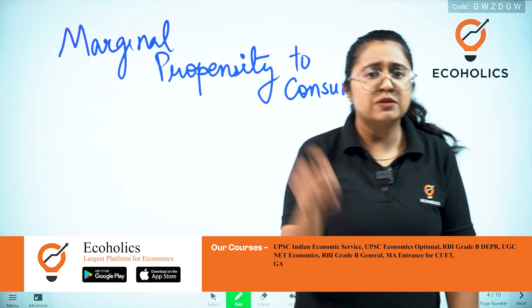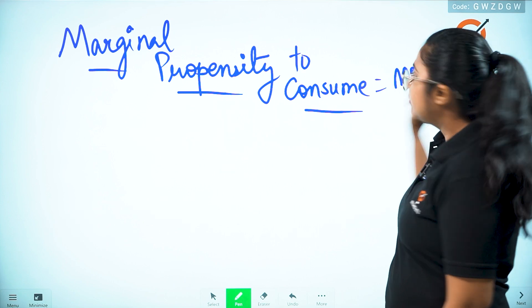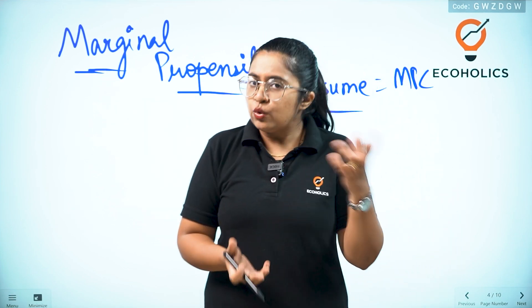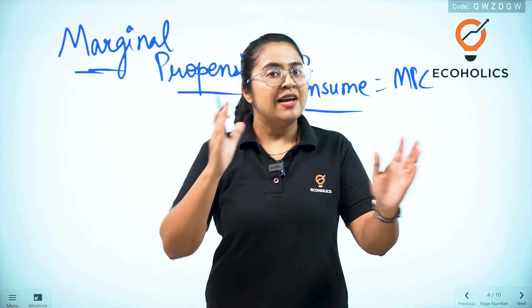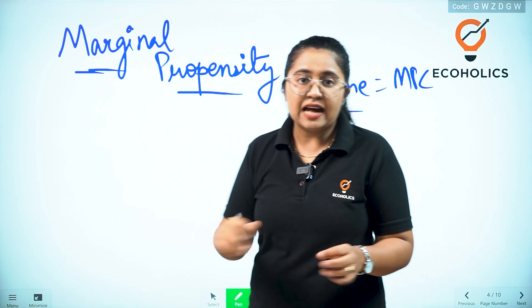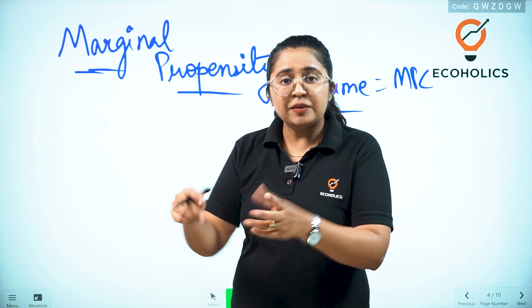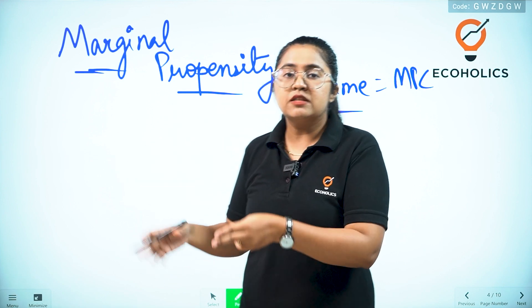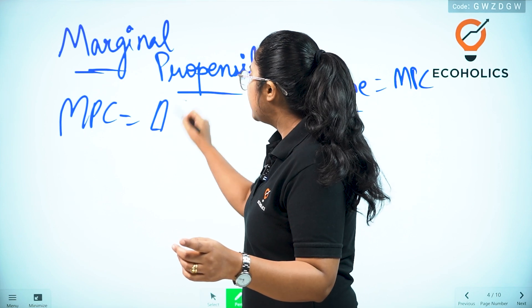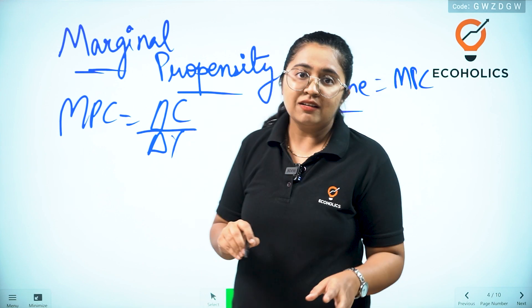Now let's understand another term very closely related to it: Marginal Propensity to Consume, also called MPC. In economics, we use the word 'marginal' when there is a certain addition into something. When we say marginal propensity to consume, it means the additional consumption of an individual from the additional income that individual has earned. MPC is the change in consumption due to an addition made in the income.